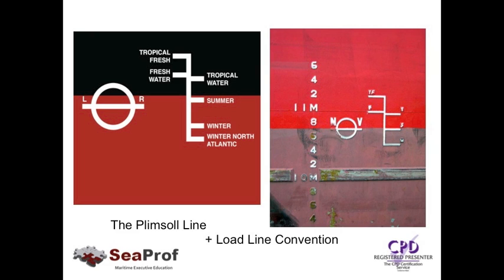Looking back at the diagram, underneath the summer mark you'll see winter marks and a Winter North Atlantic mark. These additional marks relate to the season of the year. If a vessel is loading during the winter season, she's only allowed to load to the winter mark, because weather conditions — heavy seas, heavy winds — will be much worse, and the load line convention dictates that the vessel needs a greater margin of safety. Conversely, above the summer line is the tropical line, which the vessel can load to in a tropical zone such as Singapore, where the weather is always more benign and the vessel can load deeper.